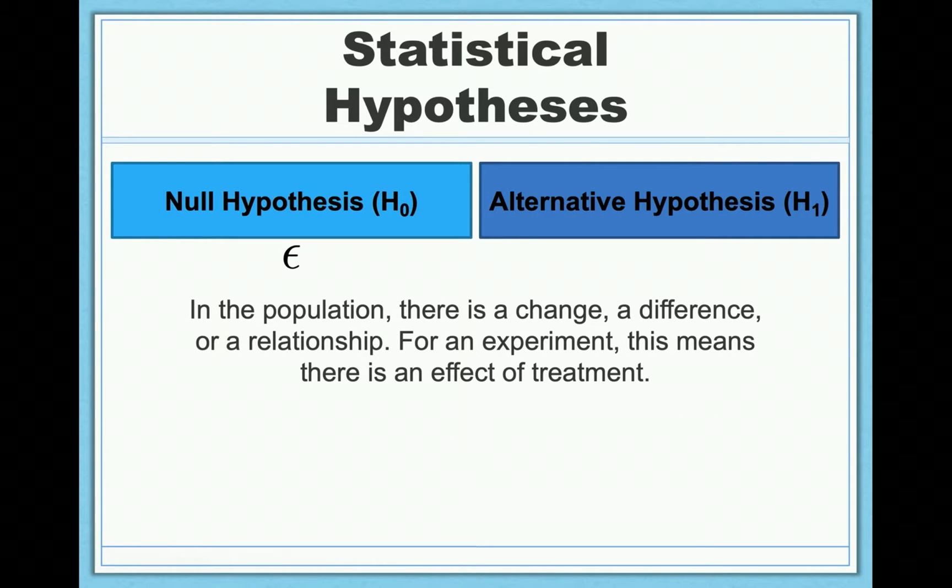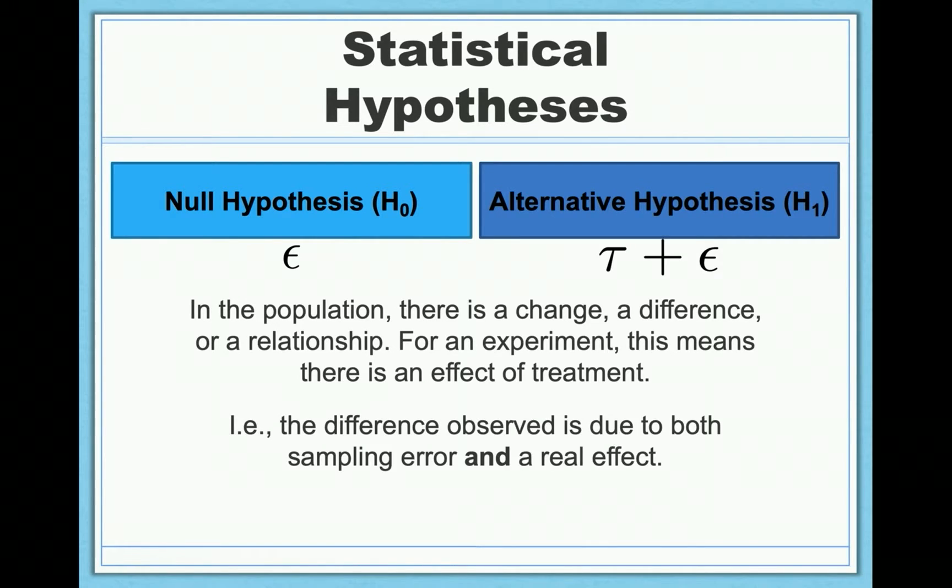The alternative is just the opposite. The alternative states that in the population, there is a change, a difference, a relationship, or more broadly, an effect. We can symbolically identify the alternative as follows: tau plus epsilon, as we saw before, a real effect and sampling error still operating. You'll notice we notate the null by H sub zero and the alternative by H sub one. The subscript here basically means, is there an effect or not? So the hypothesis of no effect, zero, or the hypothesis of one, yes, there is an effect.